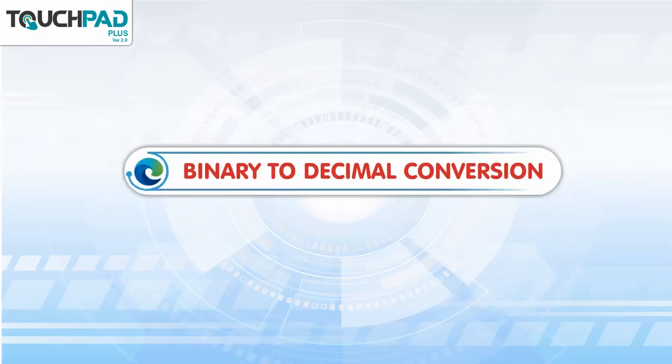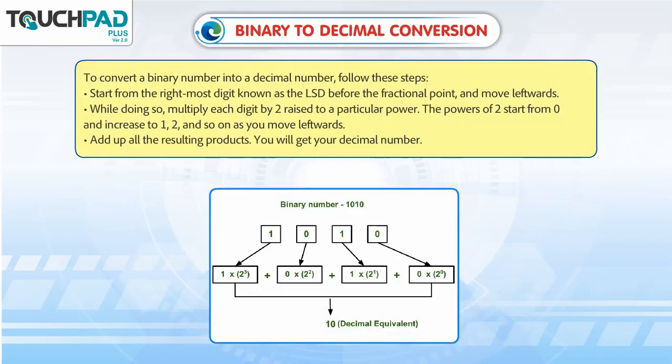To convert a binary number into a decimal number, follow these steps. Start from the rightmost digit, known as the LSB, before the fractional point, and move leftwards. Multiply each digit by 2 raised to a particular power. The powers of 2 start from 0 and increase to 1, 2, and so on as you move leftwards. Add up all the resulting products and you will get your decimal number.